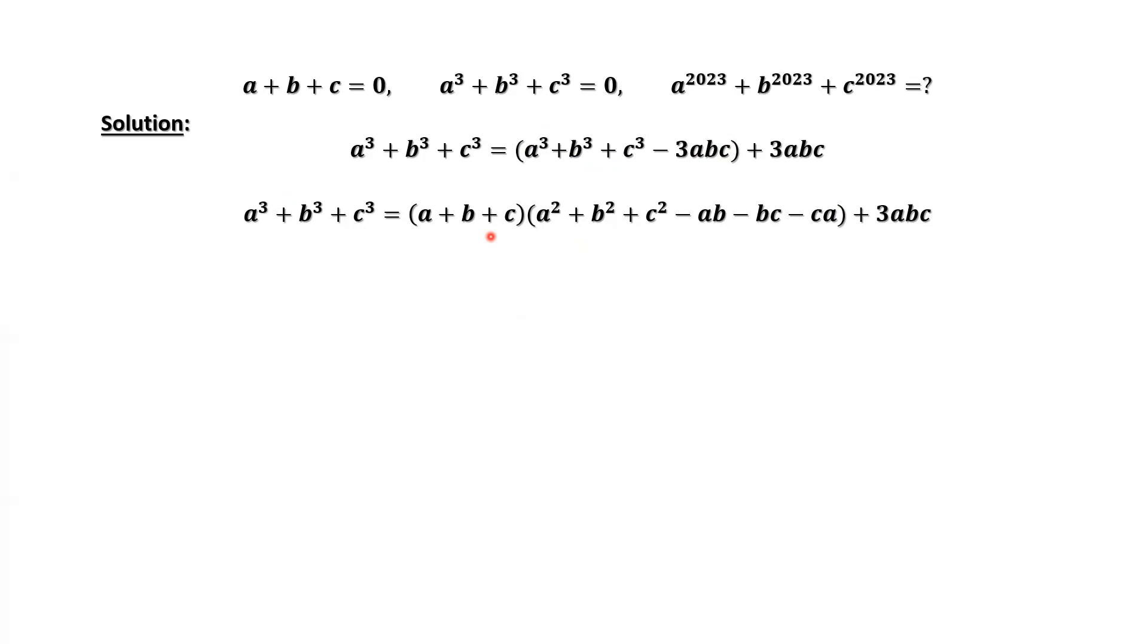Now we are ready to use the two given conditions. The left-hand side, A to the power 3 plus B to the power 3 plus C to the power 3 equals 0. So we have minus 3abc. This part equals 0. Therefore, we have the following equation.